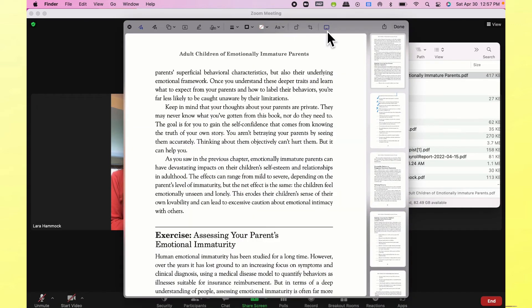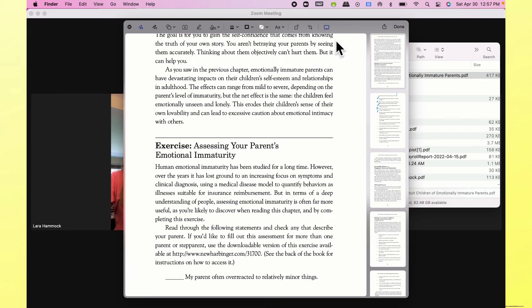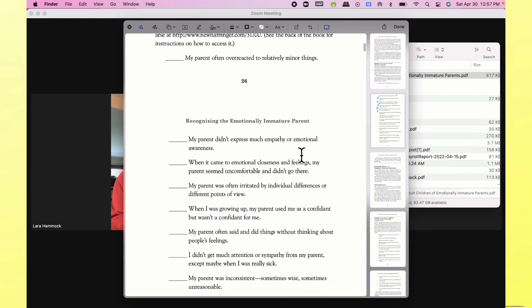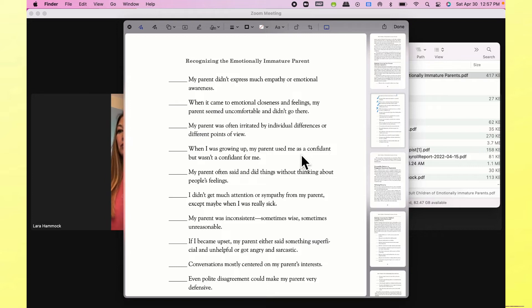Once you have the document open in Finder, you can go up to the markup icon and hit the arrow to the right of it and select the device that you want to use to draw on the PDF. If you select your iPad, it will show up on your iPad and you can use your Apple Pencil and iPad to markup. Then you can share your screen and bring up the Finder app to show the changes that are being made from your iPad.